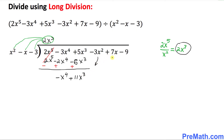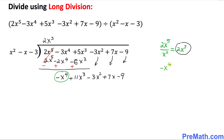We bring down the unused terms: negative 3x² plus 7x minus 9. Now look at the new leading term, which is negative x⁴. We divide negative x⁴ by the leading term of the divisor, x², and simplify to get negative x². This term goes on the top.